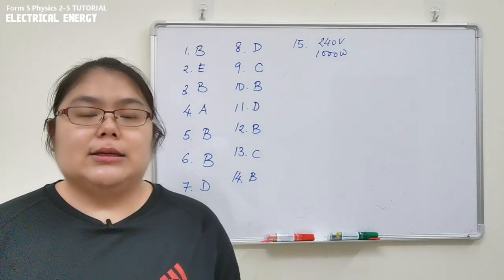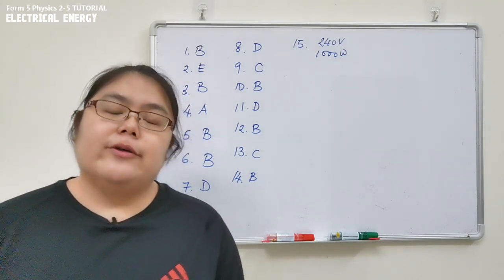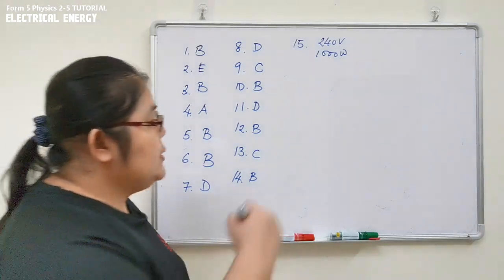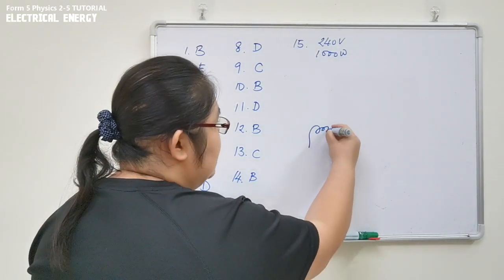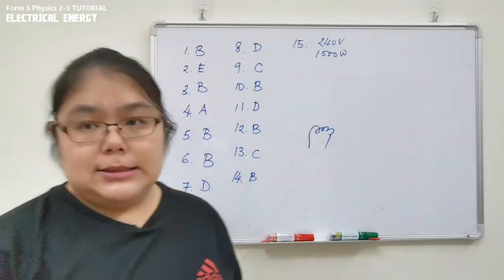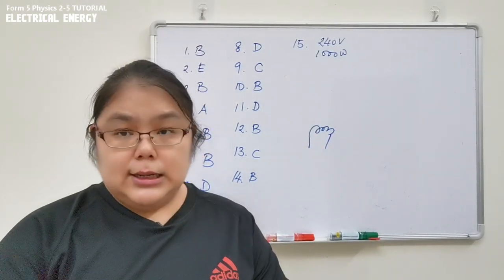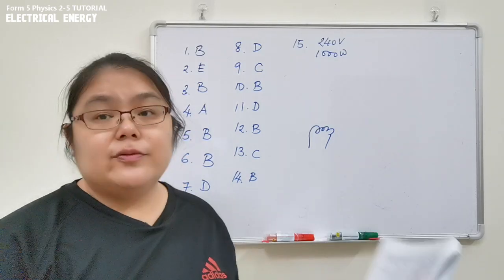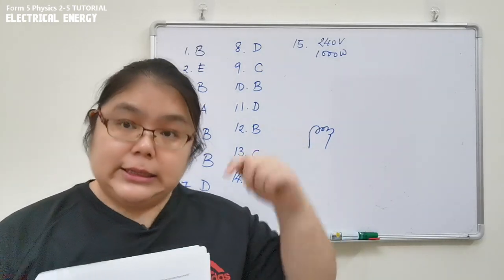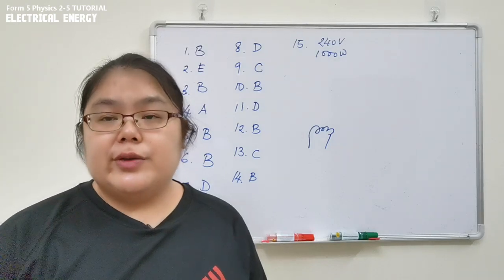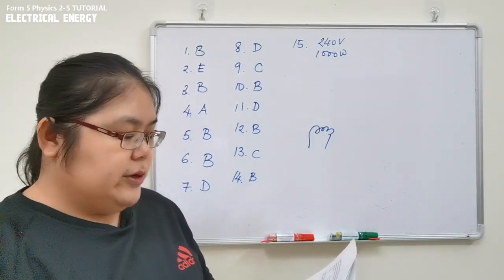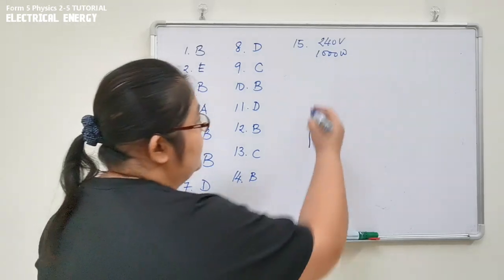Remember: for a light bulb filament, we use tungsten. But for the heater — such as a kettle or immersion heater — we use nichrome. So the answer for part (a) is nichrome.